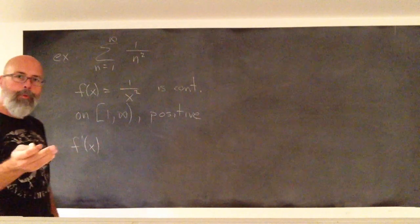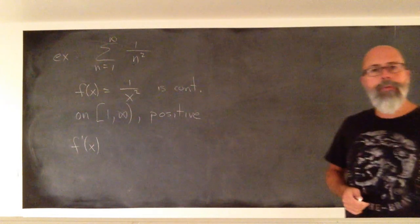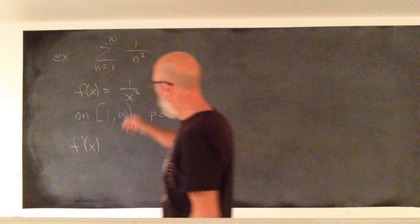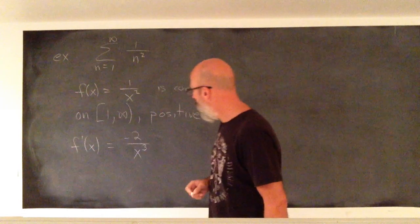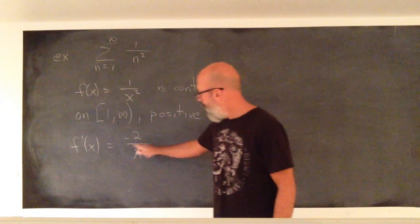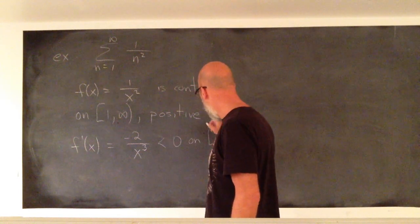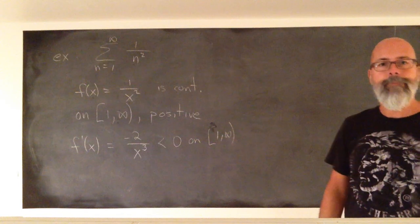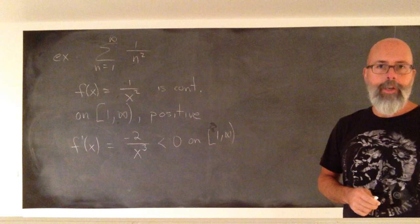From Calc 1, all we need to do is show that the derivative is negative. If the derivative is negative, your function is decreasing. The derivative is negative 2 over x cubed. On the interval 1 to infinity, the denominator is positive and the numerator is negative, so this is less than 0 on 1 to infinity. So it satisfies the hypotheses of the integral test.